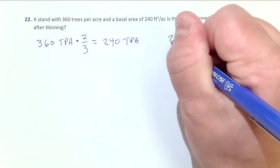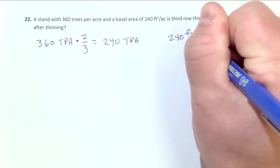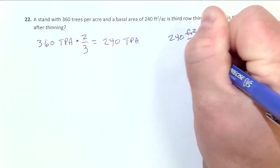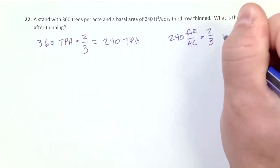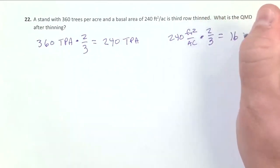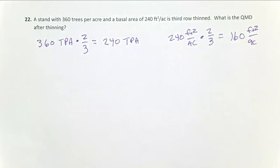Similarly, for basal area, I have 240 feet squared per acre. And I could multiply that by two-thirds. And that tells me I have 160 feet squared per acre left after this hypothetical thin. Not very realistic, pretty high basal area to have after thin, but the math is the same regardless of these numbers.